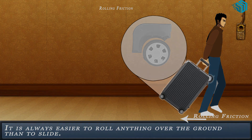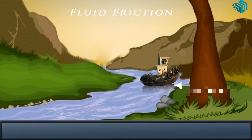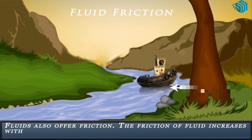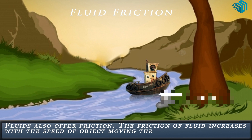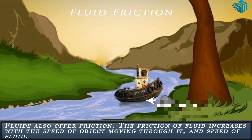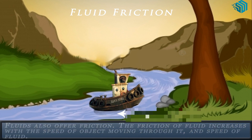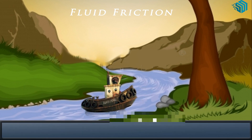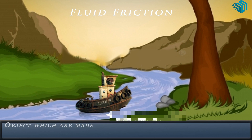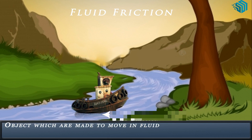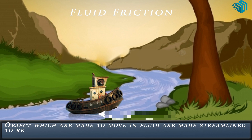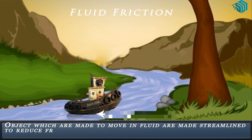Let us learn about fluid friction. Fluids also offer friction. The friction of fluid increases with the speed of the object moving through it and the speed of the fluid. Objects which are made to move in fluid are made streamlined to reduce friction offered by fluid. For example, a ship, a boat, and fish moving in water.